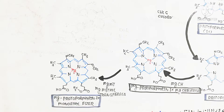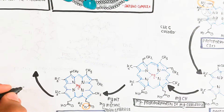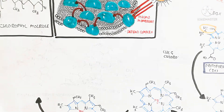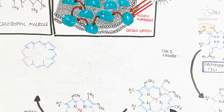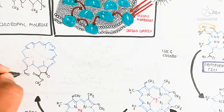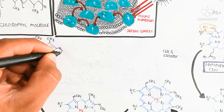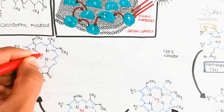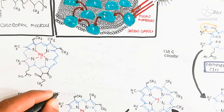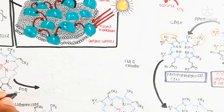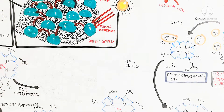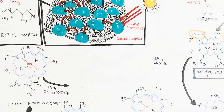After the monomethyl ester formation, divinyl protochlorophyllide formation will occur. The magnesium protoporphyrin 9 monomethyl ester carboxylase enzyme is used to produce divinyl protochlorophyllide. A ring-like structure will form, and addition of a methyl group will occur. So divinyl protochlorophyllide is produced.